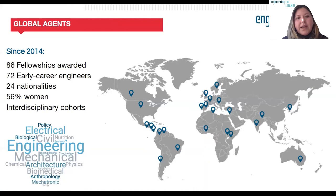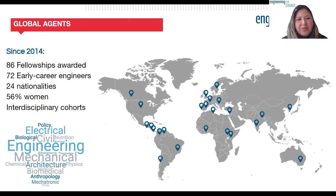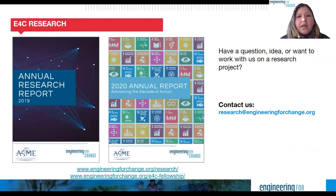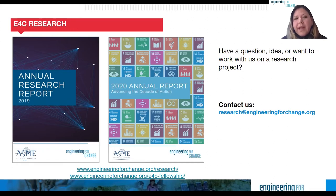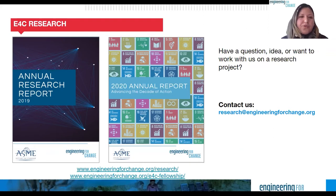Our fellows cover the whole continent. We've awarded 86 fellowships so far, and you'll be hearing from one of them — Jacob from Kenya. We have cross-cutting engineering expertise, have covered 24 nationalities, and 56% of our fellows are women. If you have questions or ideas to work with us on research, reach out at research@engineeringforchange.org or check out our annual reports on our website.